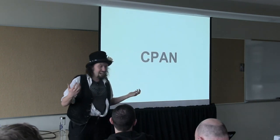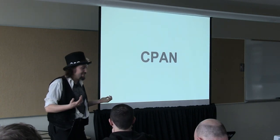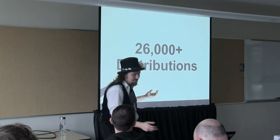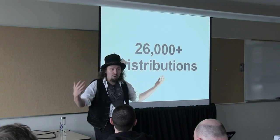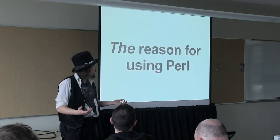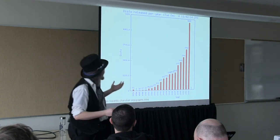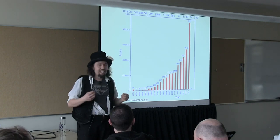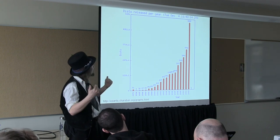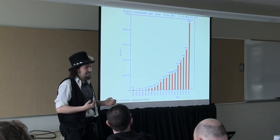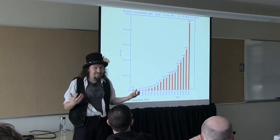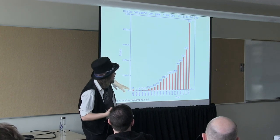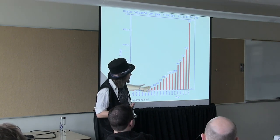Where do you find all the best tools? You find them on the CPAN, the Comprehensive Perl Archive Network. For those of you not familiar with CPAN, there are around 26,000 distributions, and a distribution can contain multiple modules — it's the reason for using Perl. Here's a graph made in late last year, the 4th of December, showing the number of new distributions released to the CPAN per year. For anyone who says Perl development is slowing down — that is not a graph which is slowing down. That is a graph with a curve going up.